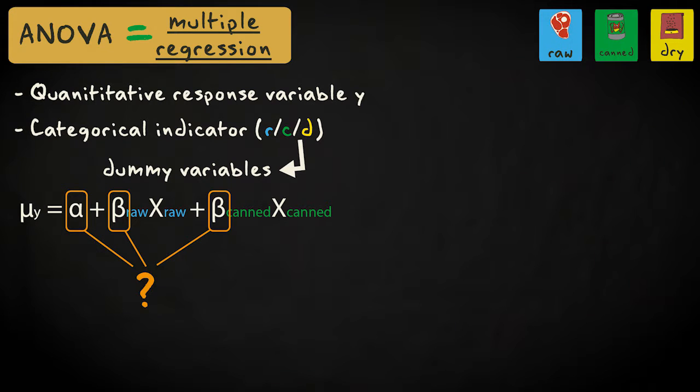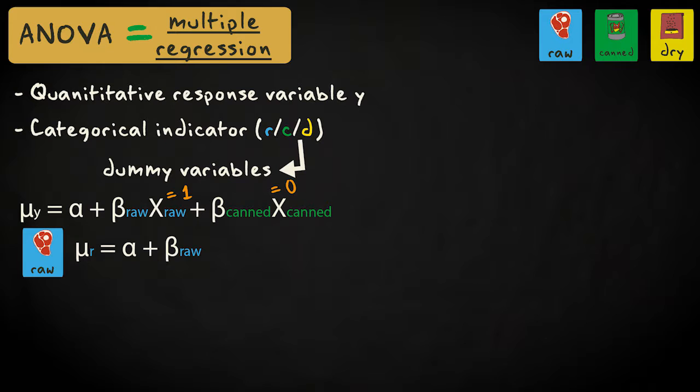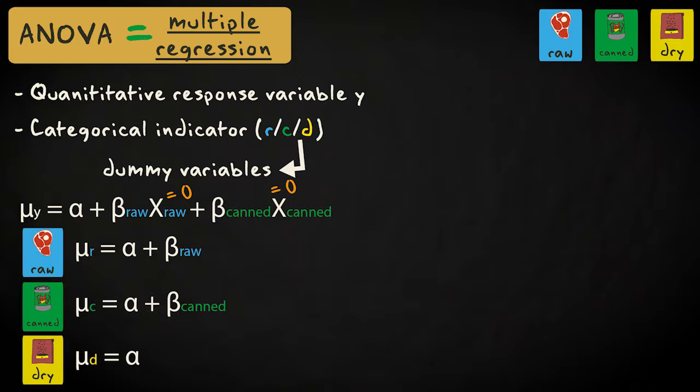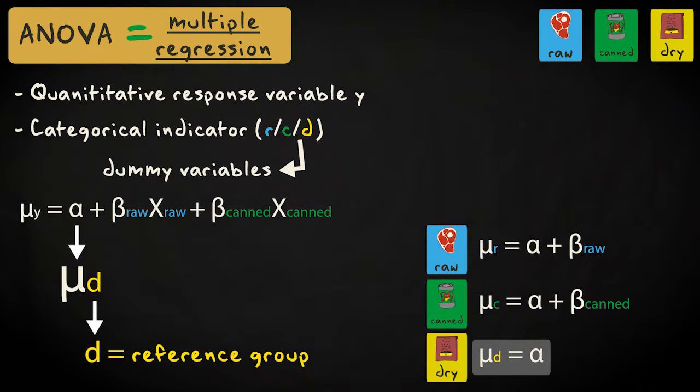How do we interpret the intercept and the regression coefficients? We'll consider the regression model for each diet group. For cats fed on raw meat, the population mean equals alpha plus beta sub raw. For cats fed on canned food, the population mean equals alpha plus beta sub canned. For cats fed on dry food, the population mean equals alpha, so the intercept represents the population mean of the last group, fed on dry food in this case, called the reference group.